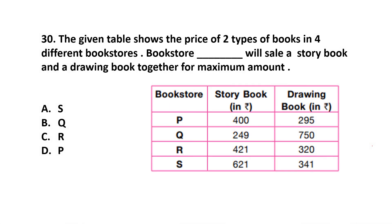Question number 30. The given table shows the price of two types of books in four different bookstores. Which bookstore will sell a story book and a drawing book together for the maximum amount? Adding the story book and drawing book prices: P is Rs. 6.95, Q is Rs. 9.99, R is Rs. 7.41, and S is Rs. 9.62. The maximum amount is Q. The answer is option B, Q.